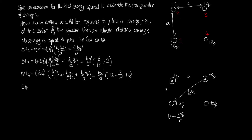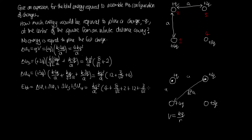To get the total energy to assemble the distribution, we sum U₁ + U₂ + U₃ + U₄, pulling out the common factor kq²/a. U₁ is zero, U₂ contributes 4, U₃ contributes (8/√2 + 2), and U₄ contributes (12 + 3/√2 + 6). Collecting terms: 4 + 2 + 12 + 6 = 24, and 8/√2 + 3/√2 = 11/√2. So the total energy is kq²/a · (24 + 11/√2).